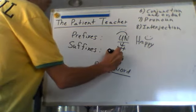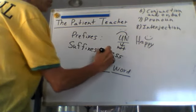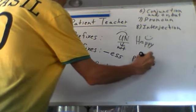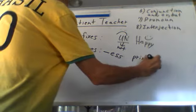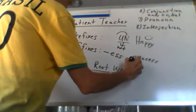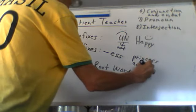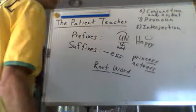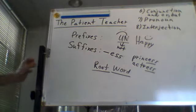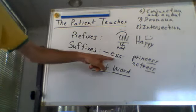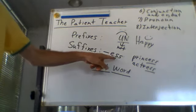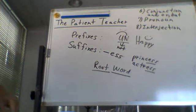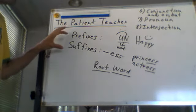For suffixes, the one I always use is '-ess.' So if you have the word 'princess' or 'actress,' you could recognize pretty quickly that '-ess' refers to woman. So keep that in mind.